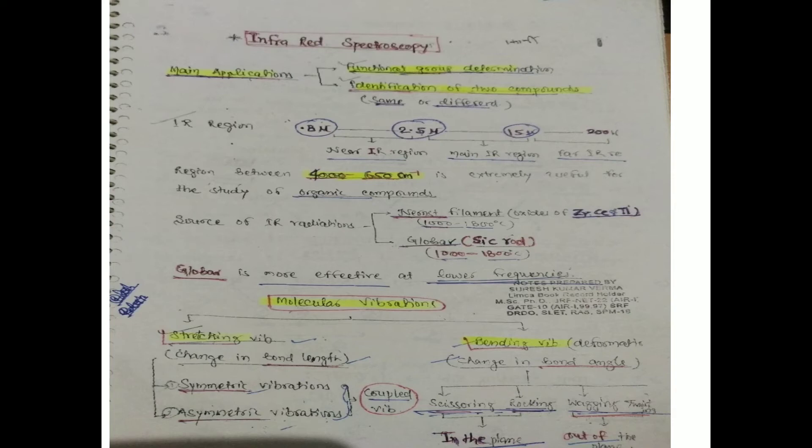Bending vibrations are of four types: first is scissoring, second is rocking, third is wagging, and fourth is twisting. Scissoring and rocking occur in the same plane, while wagging and twisting occur out of the plane.